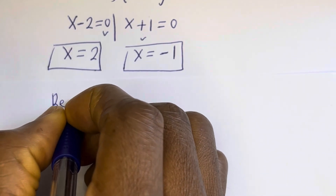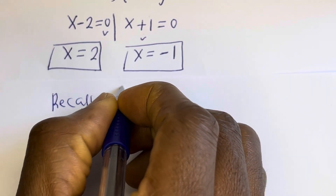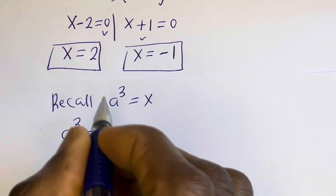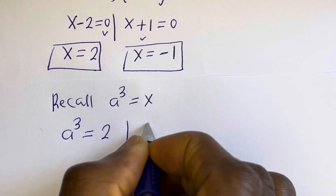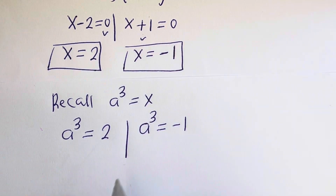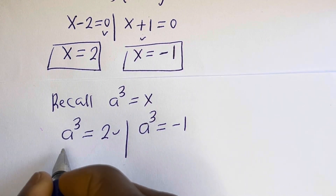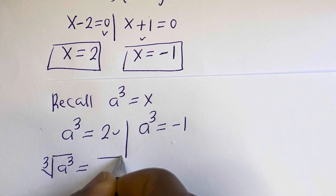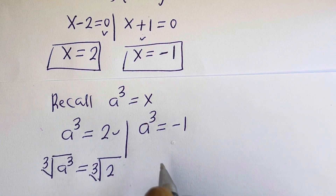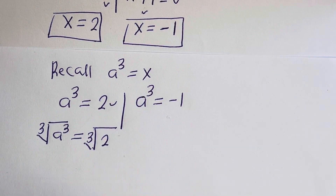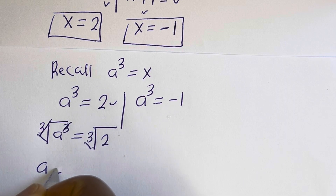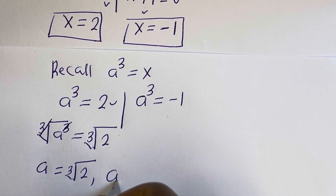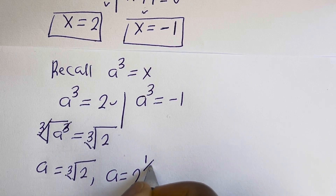Recall that a to the power of 3 is equal to x. So a to the power of 3 equals 2 for the first value of x. Taking the cube root of both sides, a is equal to the cube root of 2, which is 2 to the power of 1 over 3. This is one value of a.